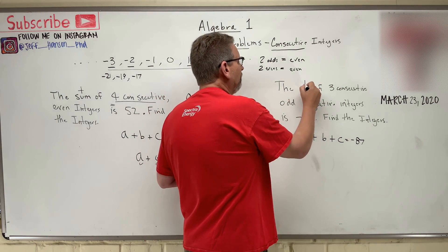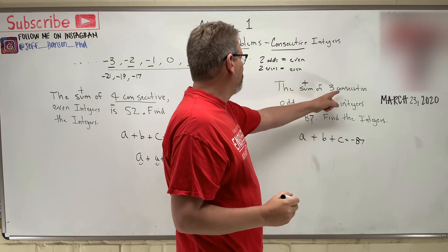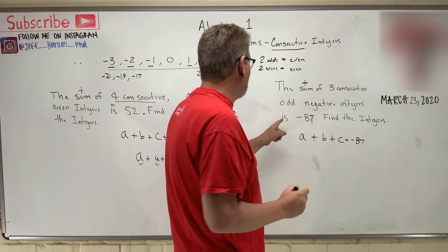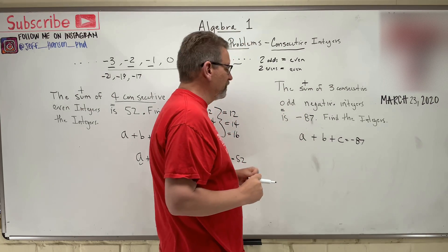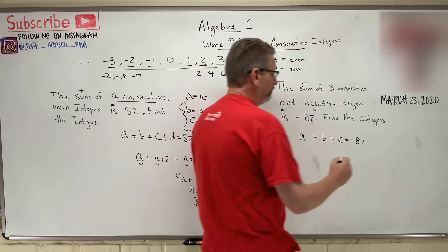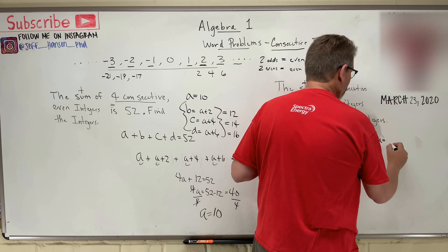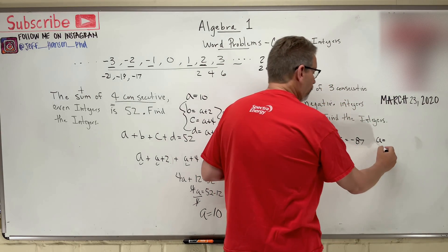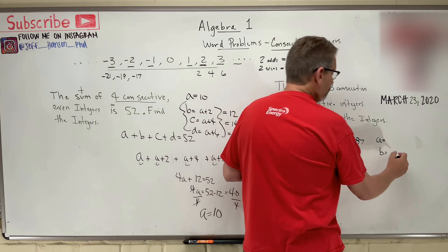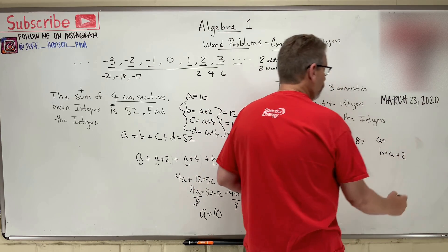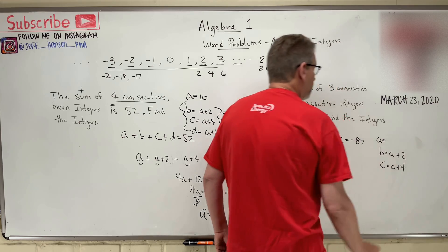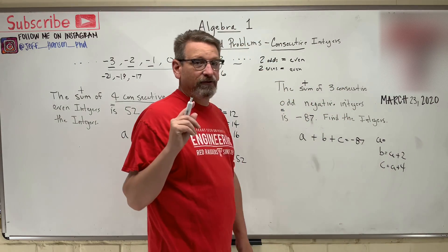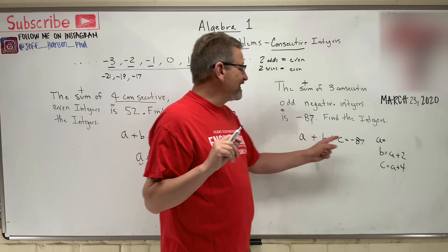So remember, the sum means plus three consecutive odd integers equals negative 87. Find the integers, okay? So just like we did over here, A is equal to some number. So what is B going to be equal to? Well, it's going to be equal to A plus two, and C equals A plus four. Now, the most important thing is for you to understand, what is A?